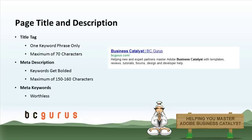You can see to the right we've got the keyword which is bolded in the title. When you do a Google search — our keyword here is business catalyst — after the keyword itself in the title, we are including the company name. We typically like to do this, separating it with a pipe or a dash, and it's usually a good idea to lead with the keyword phrase.